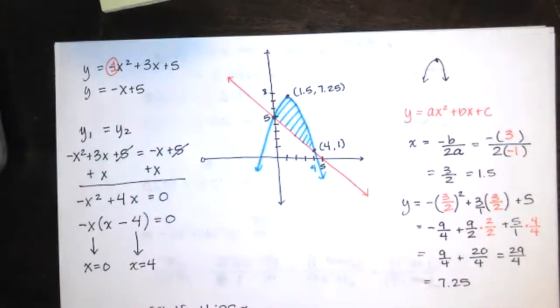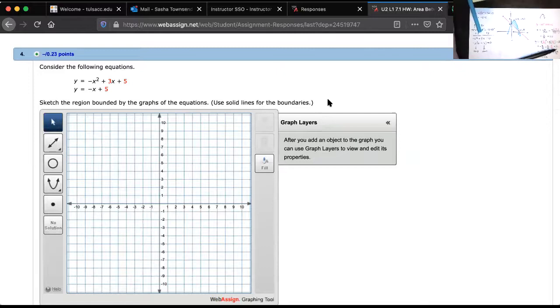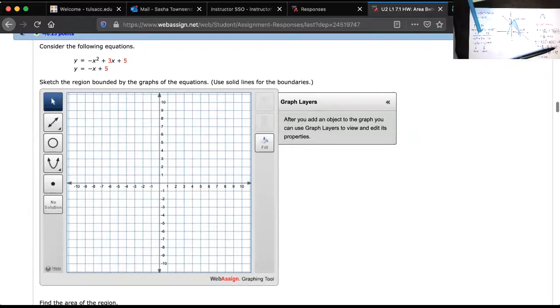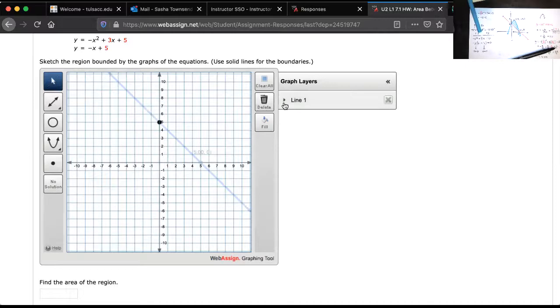Now, we're going to use WebAssign to do it. So, let me screen share with you again. So, now I'm here. I think I'll graph the line first. We'll just plot a point. And then we'll plot another point. And I've got the point 0, 5 and 5, 0, both of those on my line. That's exactly what I want.